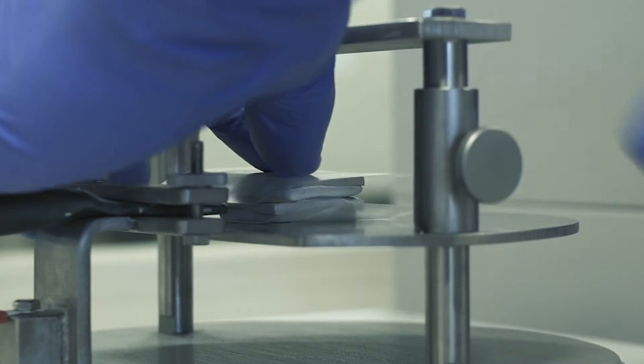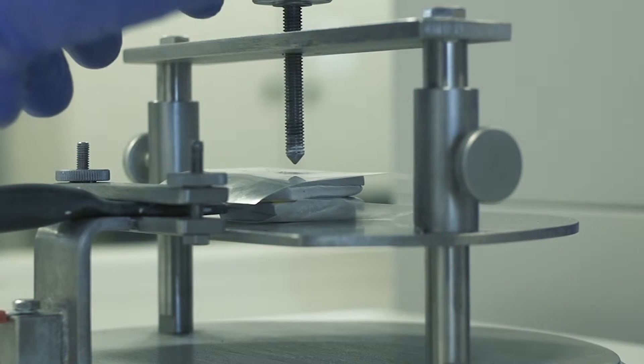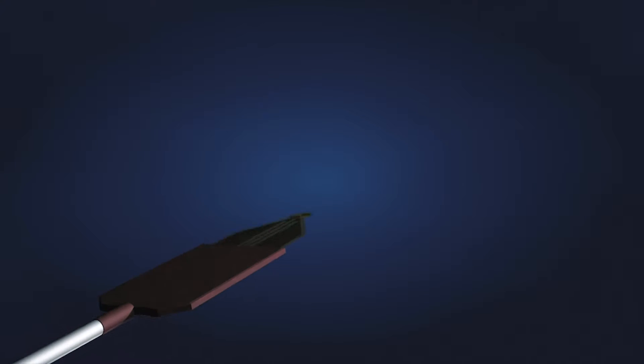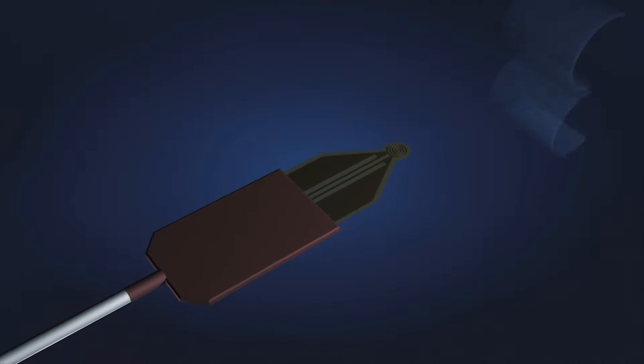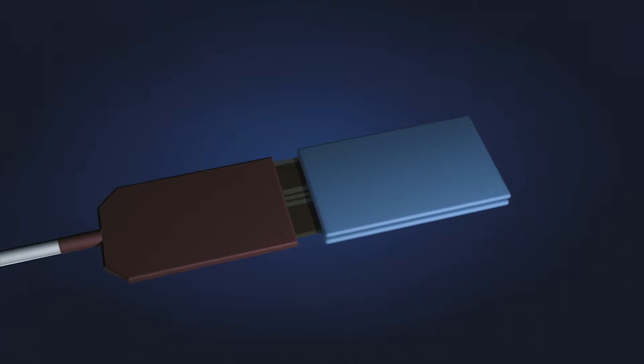The hot disk method uses a thin, disk-shaped probe placed in the center of a small sample of material. A current is run through the probe, causing it to heat up. The same probe then monitors the temperature versus time response of the sample with a very high degree of accuracy.